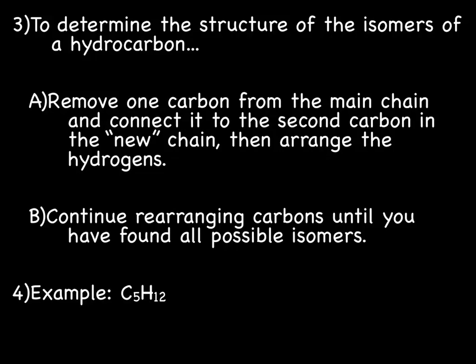So to determine the structure of isomers for a hydrocarbon, what you want to do is remove one carbon from the main chain and connect it to the second carbon in the new chain, then arrange the hydrogens. Continue moving carbons and removing carbons and re-adding them until you have all the possible isomers.